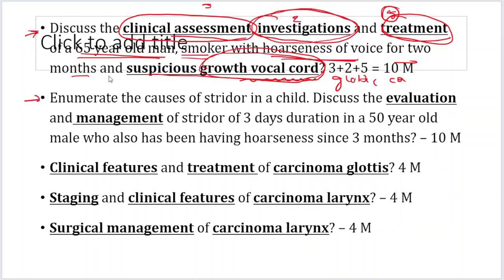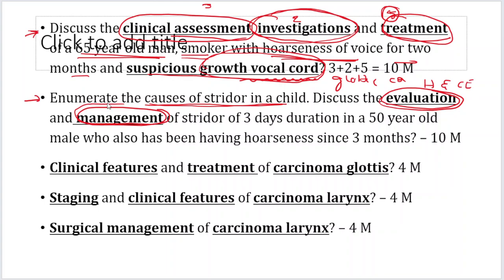The second question is also similar. Enumerate the causes of stridor in a child — another topic we will discuss later. Discuss the evaluation, meaning history and investigations. Management means investigations and treatment of a stridor. The patient has a different presentation — stridor, noisy breathing of 3 days duration. Also a 50-year-old male who has been having hoarseness for the last 3 months.